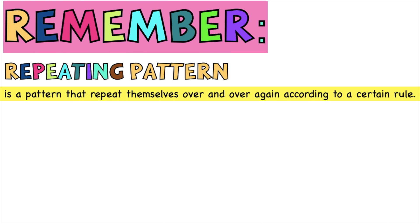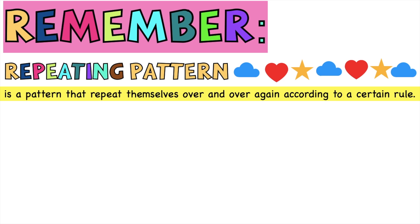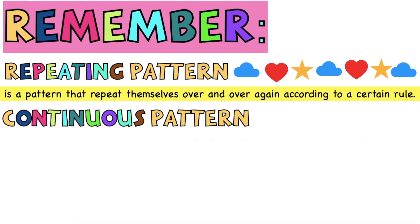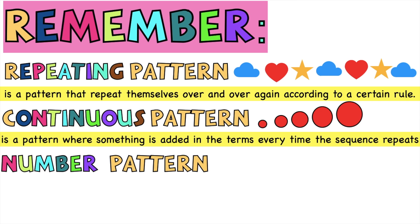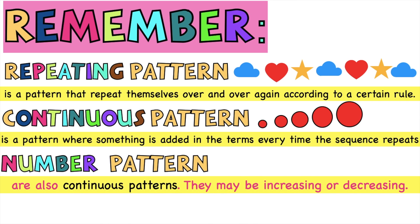Always remember, we have the repeating pattern — a pattern that repeats itself over and over again according to a certain rule. For example: clouds, heart, star, clouds, heart, star, cloud. We also have the continuous pattern — a pattern where something is added in the terms every time the sequence repeats. For example, a circle that becomes bigger and bigger. And we have the number pattern, which is also a continuous pattern. Number patterns may be increasing or decreasing. To find the next term: first find the difference between two consecutive terms, then if it is increasing, add; if it is decreasing, subtract.